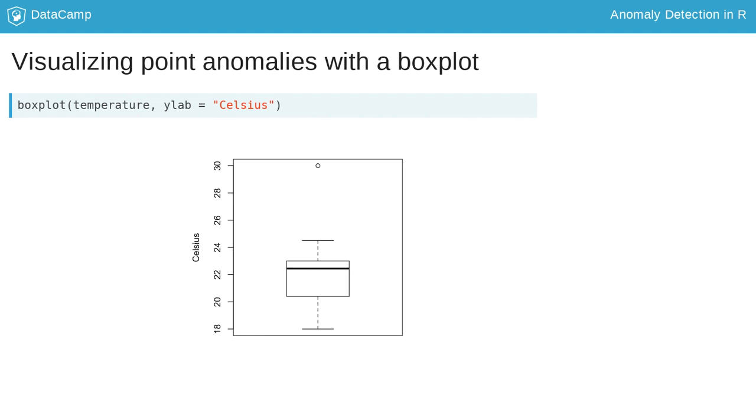The boxplot function takes a column of values as an input argument, here illustrated with the temperature data, and produces a box and whiskers representation of the distribution of the values. Note that the ylab argument accepts a character string with which to label the y-axis. In this case, the units are in Celsius.